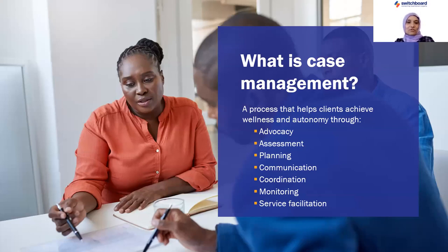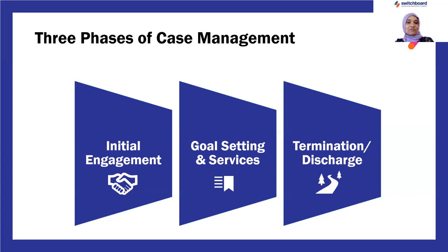There are three phases of case management. The first phase is initial engagement. This is where we build rapport with our clients to get to know them and their unique needs. During this first phase, we spend time giving the client information about our programming and the roles and responsibilities of the case manager and the client. By doing this, we're being transparent with our clients, but also starting to set our boundaries. We also begin talking about termination during this initial engagement phase, because we want clients to know this is a time-limited relationship.